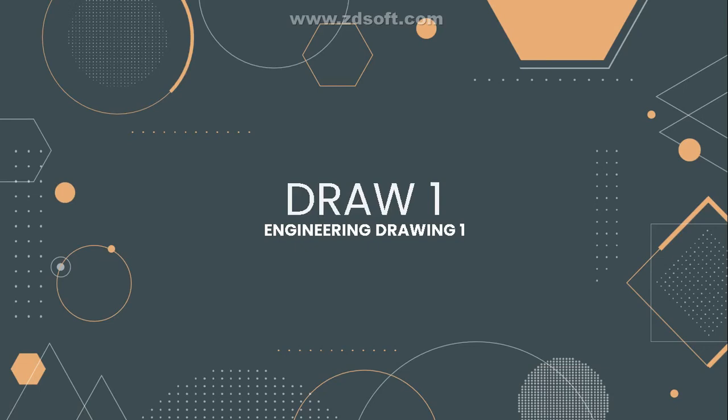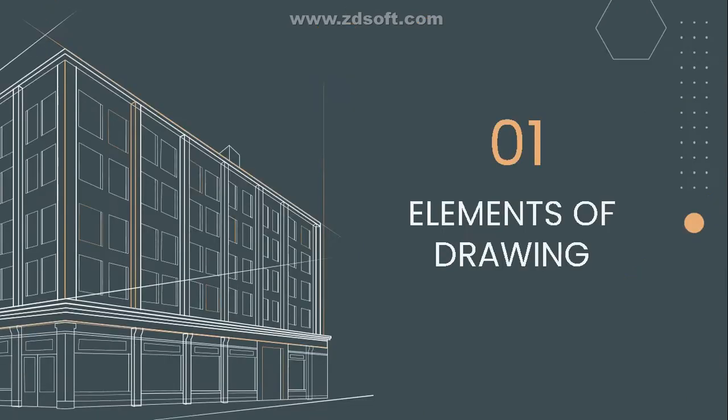Part 2 for Engineering Drawing 1 is all about the elements of an engineering drawing. Let's dig deeper into the parts or the contents of an engineering drawing.